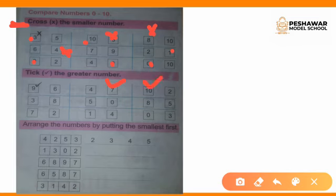3 and 8: 8 is larger than 3, so we will tick on the 8. Then 5 and 0: 5 is larger than 0, so we will tick on the 5. And 8 and 5: 8 is larger than 5, so we will tick on the 8.